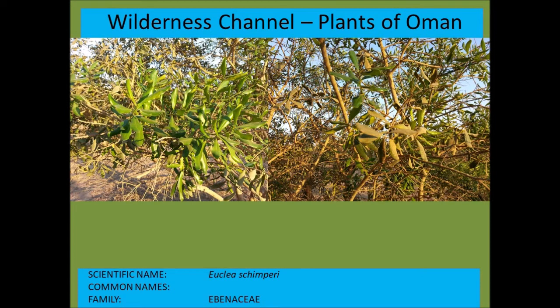Euclea chimperae — trees of this genus typically have wavy-edged leaves and tend to occur in salty areas, usually with compacted soils. From the Ebenaceae, or ebony family.